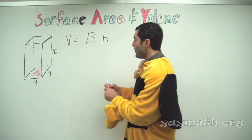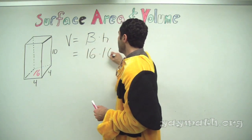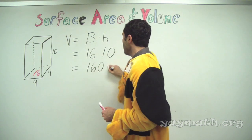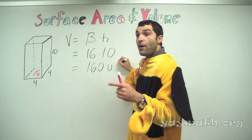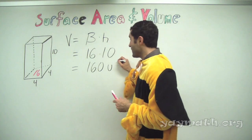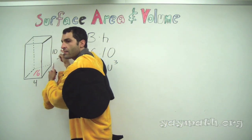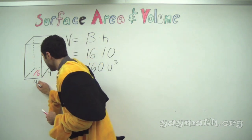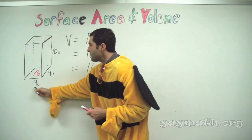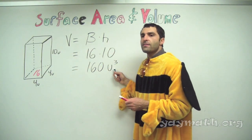So what is the volume of this square prism shape? It's 10 times 16, which equals 160. What units — to what degree? Volume is cubed. The reason why is because it's units times units times units: 4u times 4u times 10u — that's three units multiplied together.